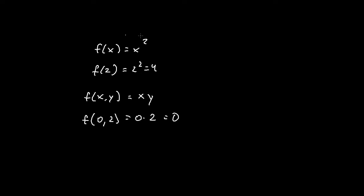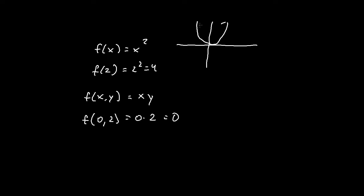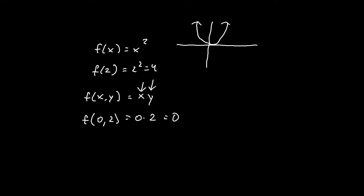In the first equation, there's only one input variable x and the output is y, or f of x. So we graph y equals x squared in a two-dimensional plane. In the bottom function, we have two input variables x and y, so the output is z. We set z equal to x times y and graph it in a three-dimensional system with x, y, and the z-axis.